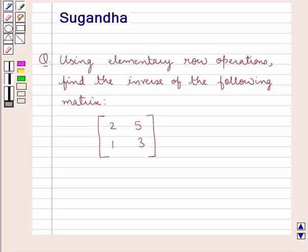Hello and welcome to the session. In this session we discuss the following question: using elementary row operations, find the inverse of the following matrix. This is a matrix of order 2 by 2 with elements 2, 5, 1, 3.